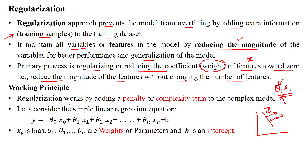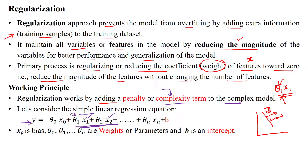The working principle of regularization is by adding the penalty parameter, also called the complexity term, into the complex model. For example, we take a simple linear regression. The multivariable linear regression equation has theta_0*x_0, and each feature has its own parameter: theta_0, theta_1, theta_2, up to theta_n, and we also add an additional penalty parameter.